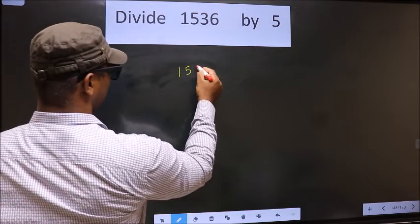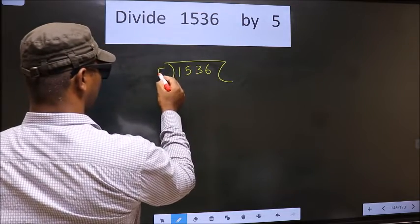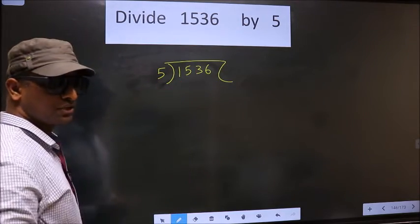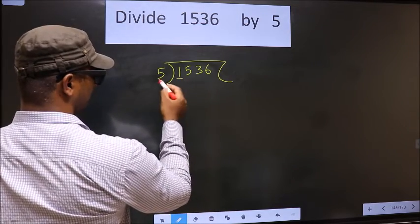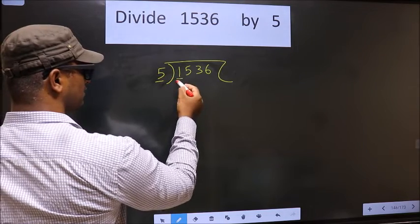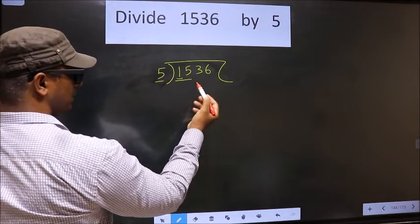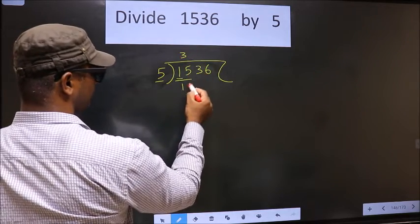That is 1536, 5 here. Here we have 1. Here 5. 1 is smaller than 5, so we take two numbers, that is 15. When do we get 15 in 5 table? 5 times 3 is 15.